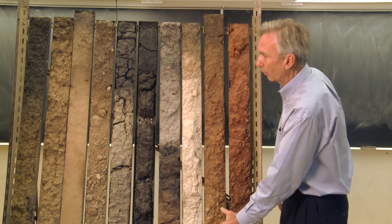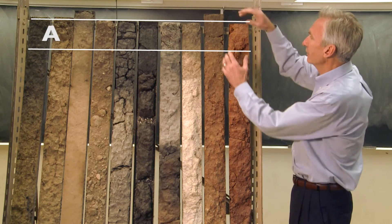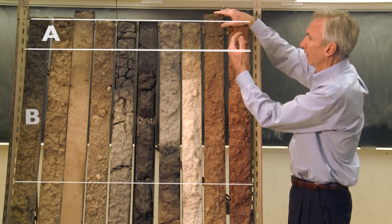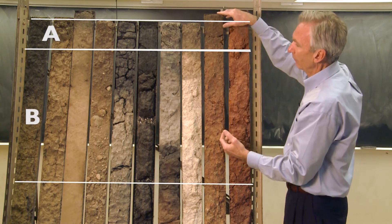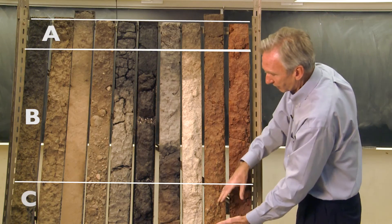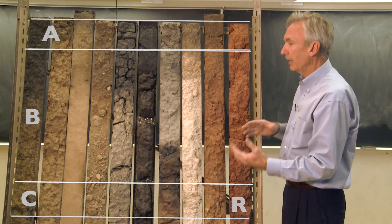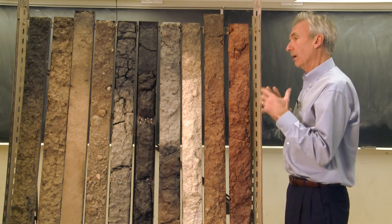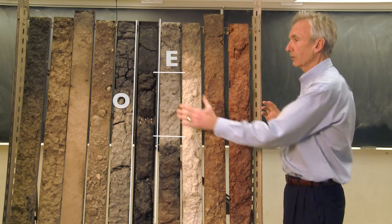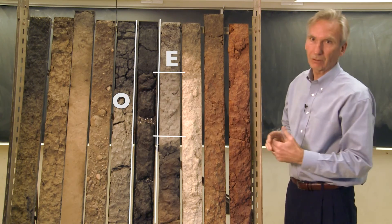So we have essentially the A horizon at the very top, the B horizon, the C horizon, and the R horizon. And then in some soil profiles we have unique features like the O and the E horizon.